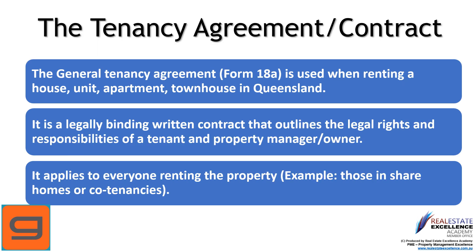The Form 18A is a legally binding contract between yourself and the property owner. Our agency manages the property on behalf of the lessor. The General Tenancy Agreement is used when renting a house, unit, apartment, or townhouse in Queensland. It is a legally binding written contract that outlines the legal rights and responsibilities of the tenant, the property owner, and our agency on behalf of the owner.